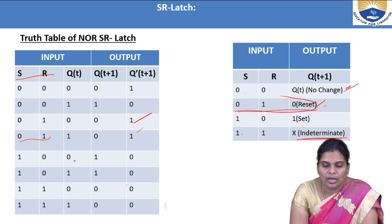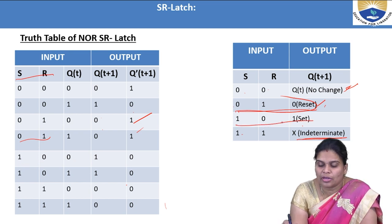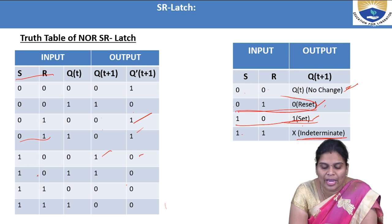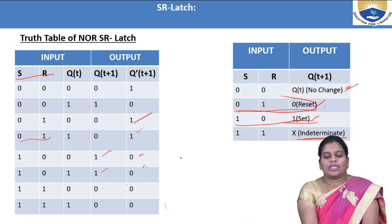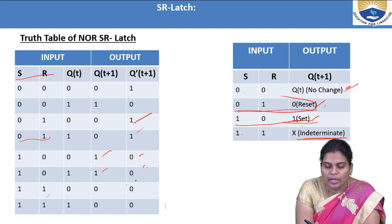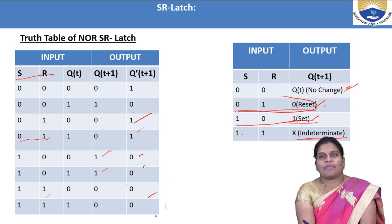When S=1, R=0, Q(t)=0 → Q(t+1)=1, Q-bar=0. When S=1, R=0, Q(t)=1 → Q(t+1)=1, Q-bar=0. The set condition forces Q to 1 regardless of Q(t). When S=1, R=1 — this is the indeterminate state; valid output values cannot be determined. When S=0, R=0 — no change; Q(t+1) = Q(t). This is the complete characteristic table for the SR latch using NOR logic.